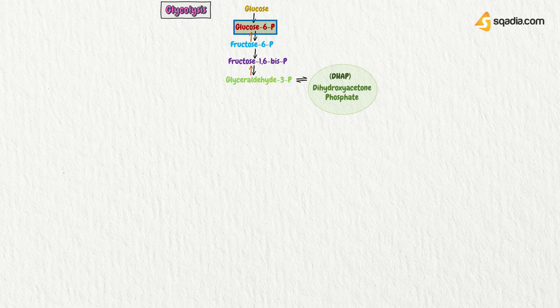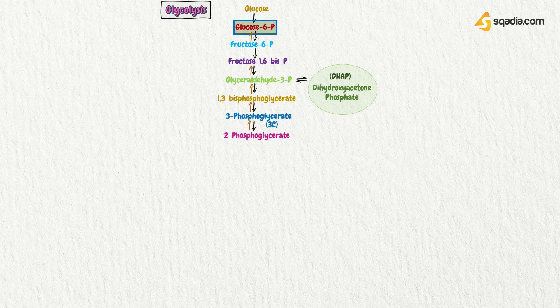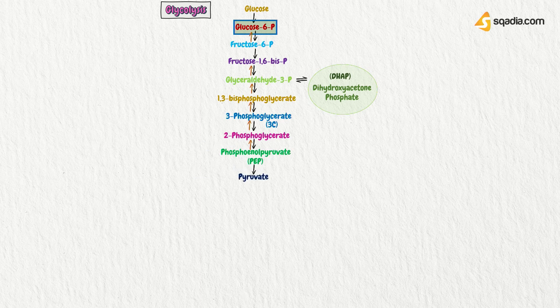However, dihydroxyacetone phosphate does not take part in glycolysis. Instead, glyceraldehyde-3-phosphate makes 1,3-bisphosphoglycerate, then phosphoglycerate, then 2-phosphoglycerate, then phosphoenolpyruvate, and lastly pyruvate molecule is generated.